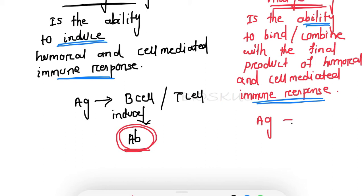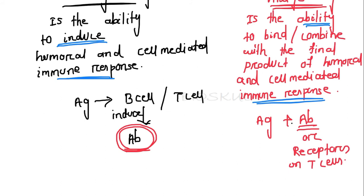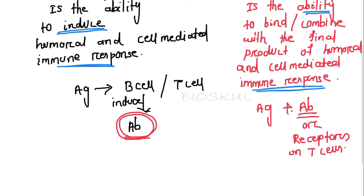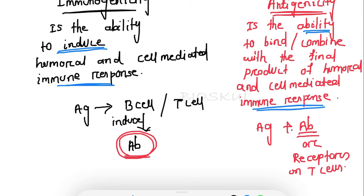In antigenicity, the antigen directly binds to the final product of immune response — that is, the antibody in humoral immunity, or the receptors on T cells. In immunogenicity, the body is actively working to generate an immune response against a particular pathogen.